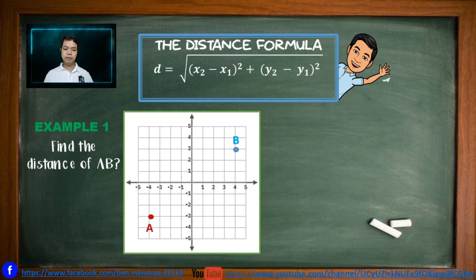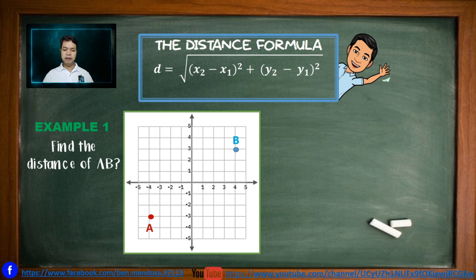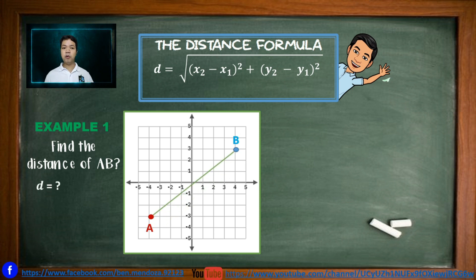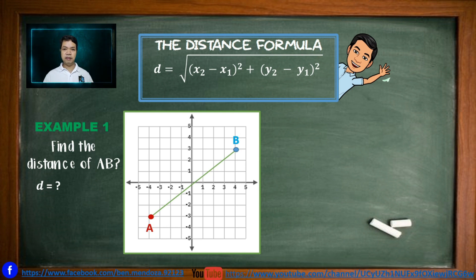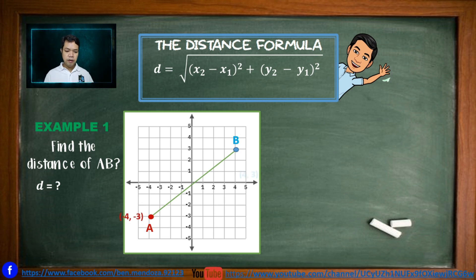Example number 1: Find the distance between the points A and B. Point A is in quadrant 3, while point B is in quadrant 1. The first thing to do is to locate the coordinates of points A and B in our Cartesian plane. Point A has a coordinate of negative 4, negative 3, while B has a coordinate of 4, 3.